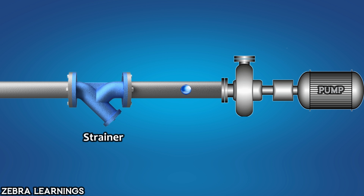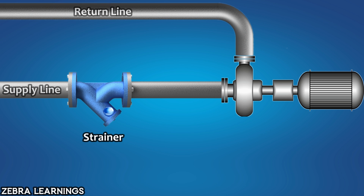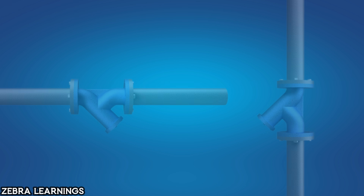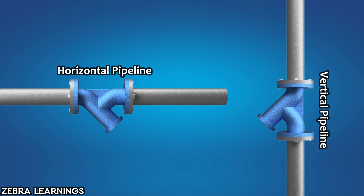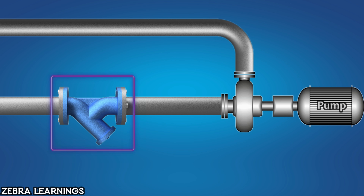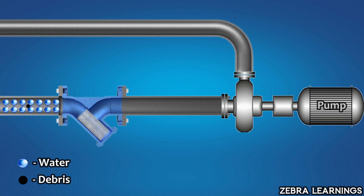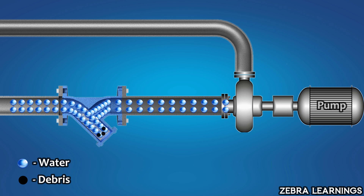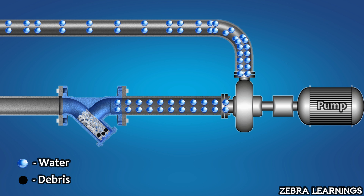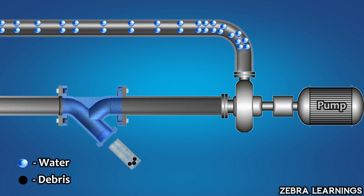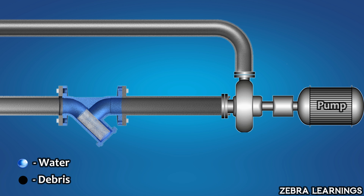Now let's understand how these two types of strainers work. Strainers are always installed in the system's supply line. We can use Y-type strainers in both vertical and horizontal pipelines. Before the water enters the system, it travels through the strainer. While traveling, all the debris in the water gets filtered with the help of mesh and stored in the strainer. The filtered water then enters the system. We can remove the mesh and clean all the particles that are stored in it. This is how a Y-type strainer works.